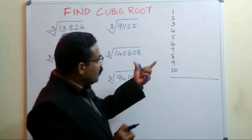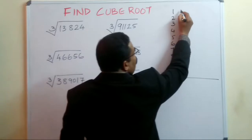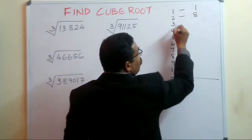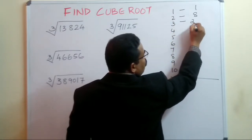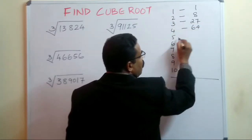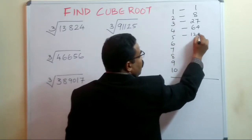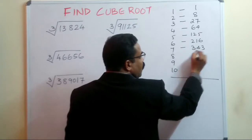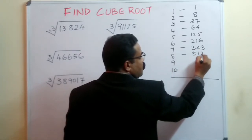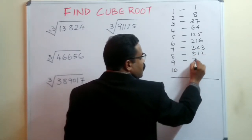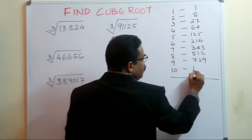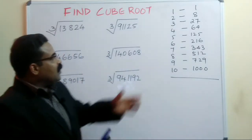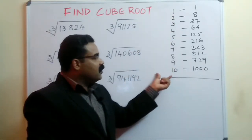The cubes of the first ten numbers are: 1³ = 1, 2³ = 8, 3³ = 27, 4³ = 64, 5³ = 125, 6³ = 216, 7³ = 343, 8³ = 512, 9³ = 729, and 10³ = 1000. You have to remember only these ten cubes.